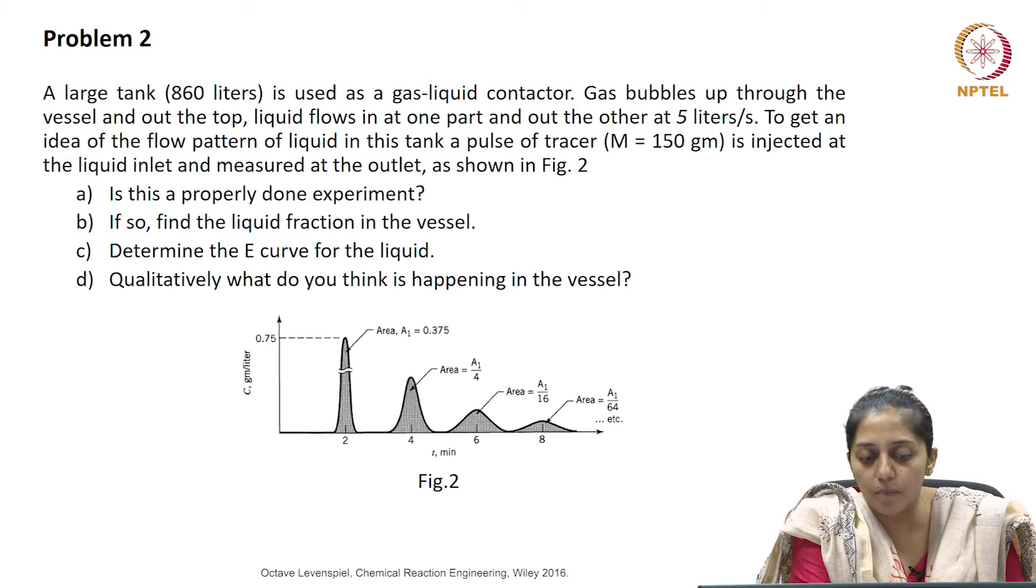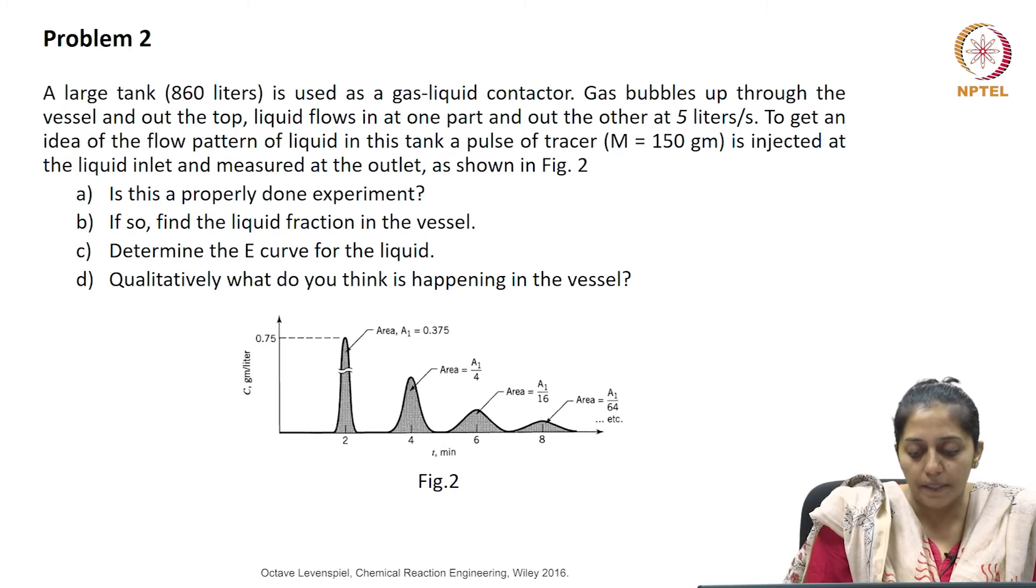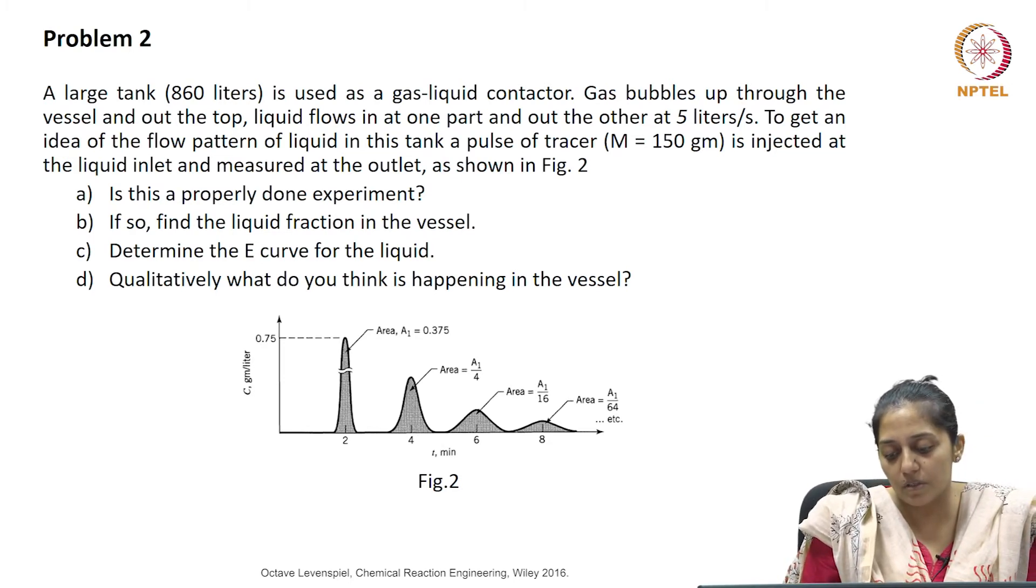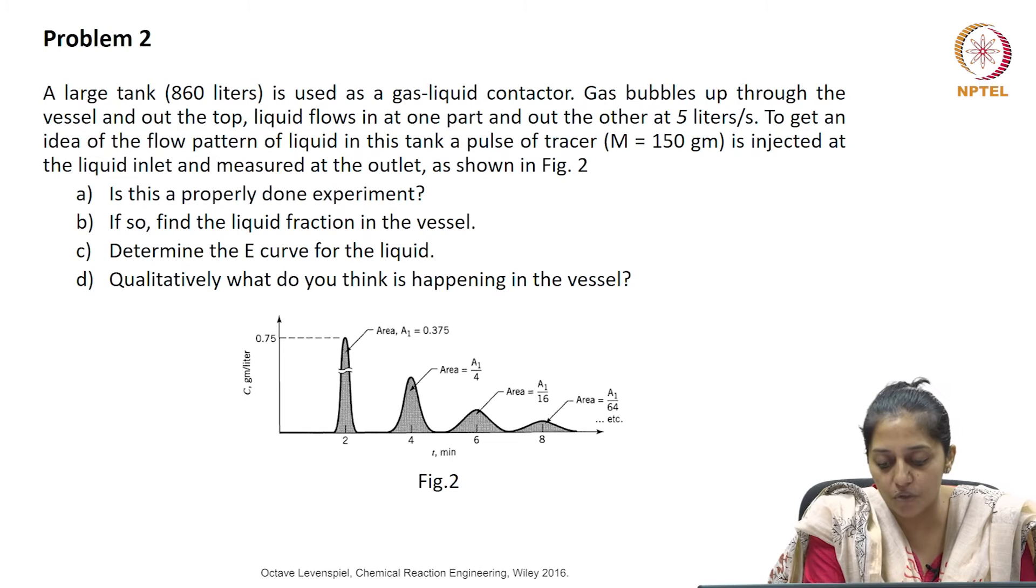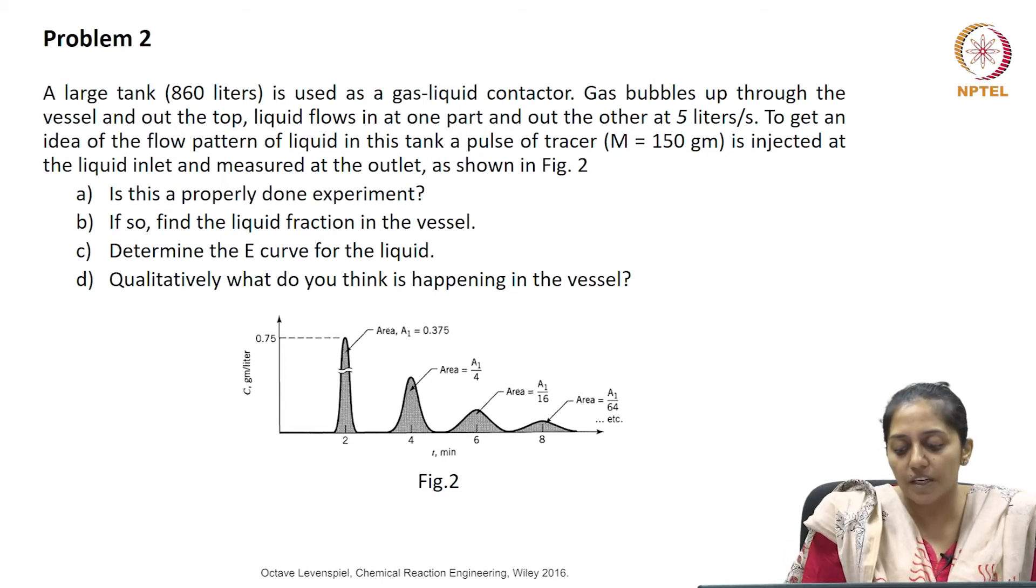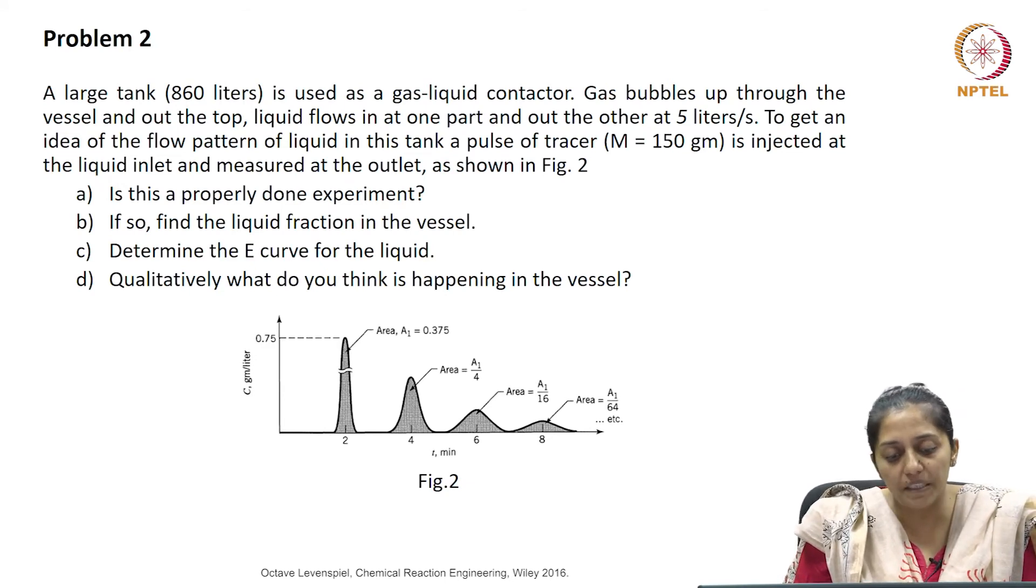In order to get an idea of the flow pattern of the liquid in the tank, a pulse of tracer with amount given as 150 grams has been injected at the liquid inlet and the concentration of the tracer is being measured. When it was measured, the concentration looks like this as shown in figure 2. What is being asked is to check if this is a properly done experiment.